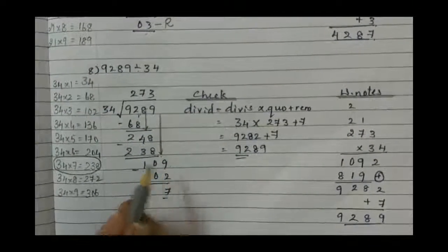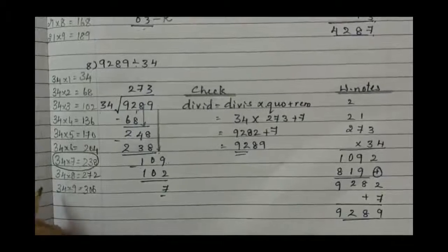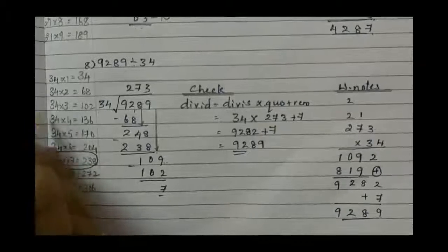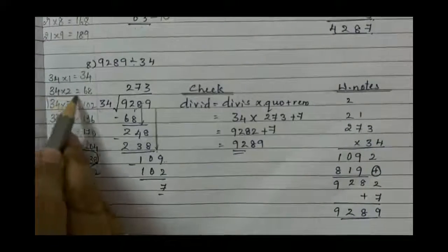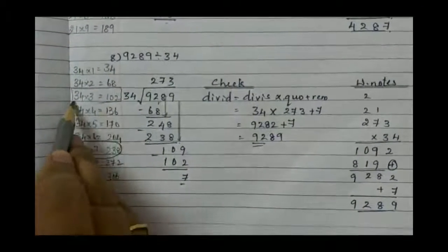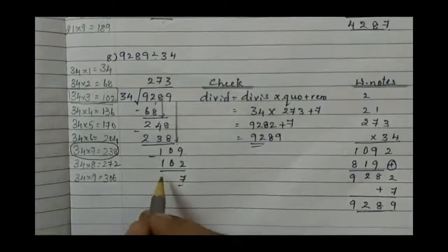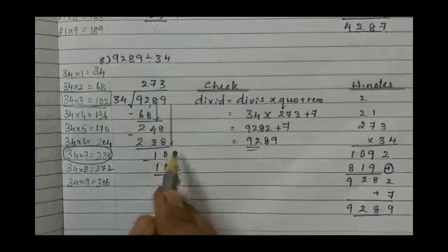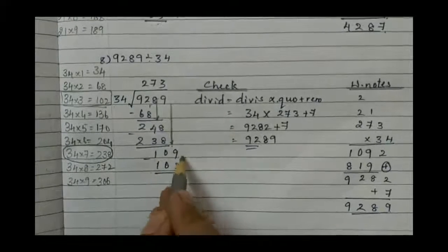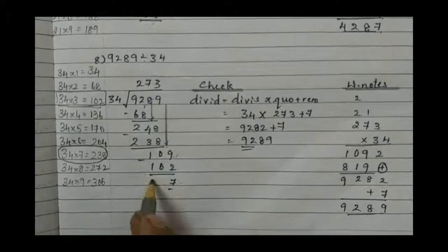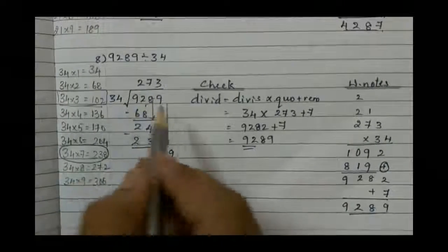Now it has become 109. Do we get 109 in table 34? No, we need to get lesser than that. When do we get it? In table 34 at the time of 3: 102. 34 into 3 gives 102. 109 minus 102: 9 minus 2 gives 7, 0 minus 0 is 0, 1 minus 1 is 0.